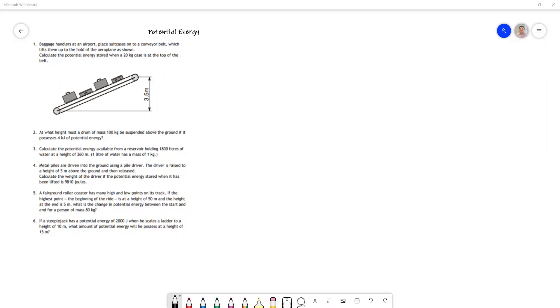In this video we're going to look at the potential energy questions from the mechanisms and structures course notes. Before we look at the questions, we'll look again at the formula for potential energy: E subscript p (potential energy) equals m (mass) times g (acceleration due to gravity) times h, where h is the height in meters above the datum, which is the height the object could fall through and release this potential energy.